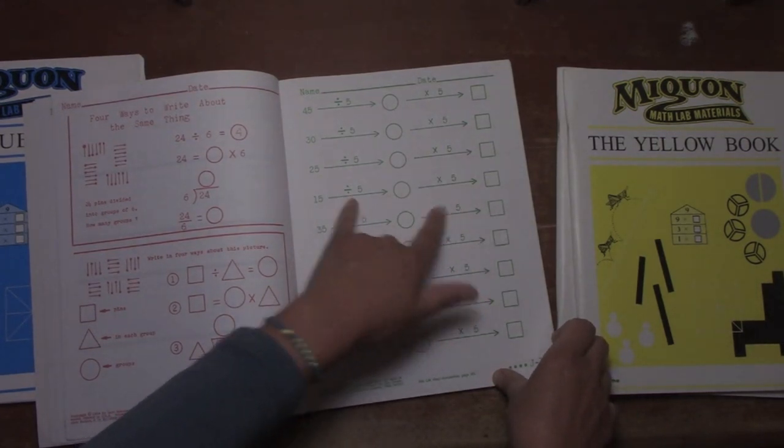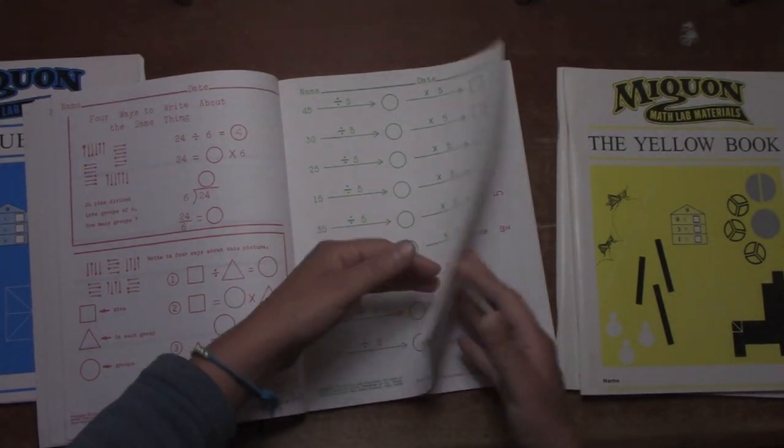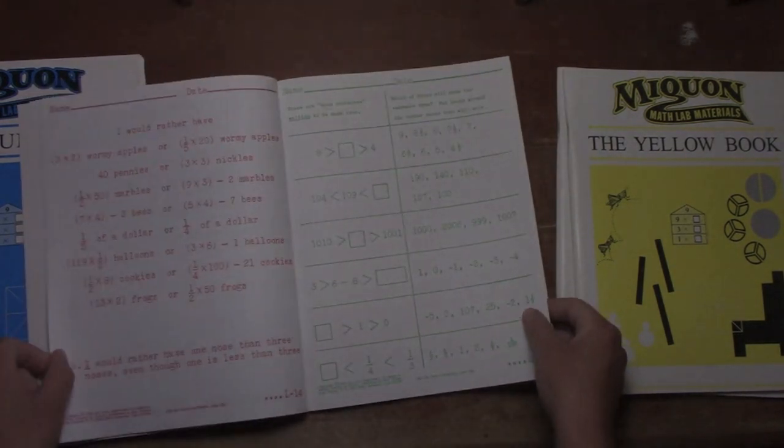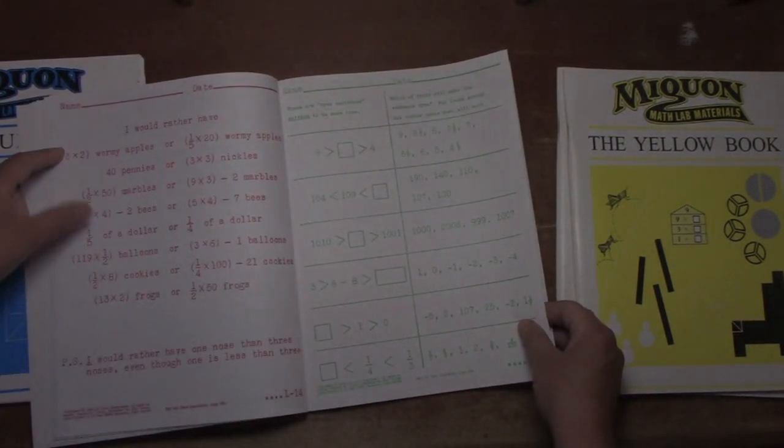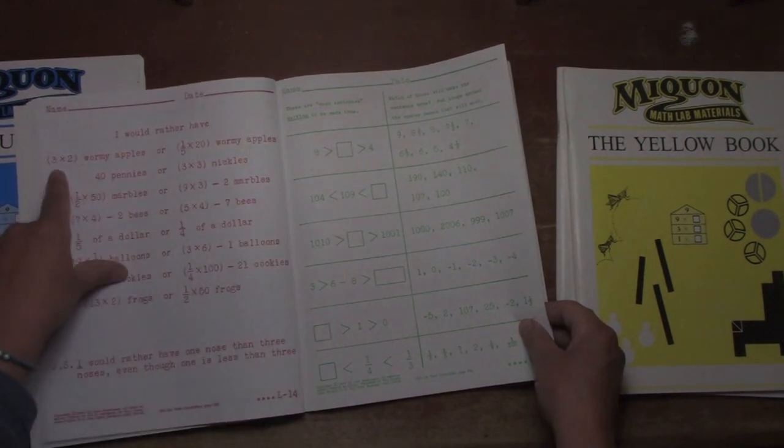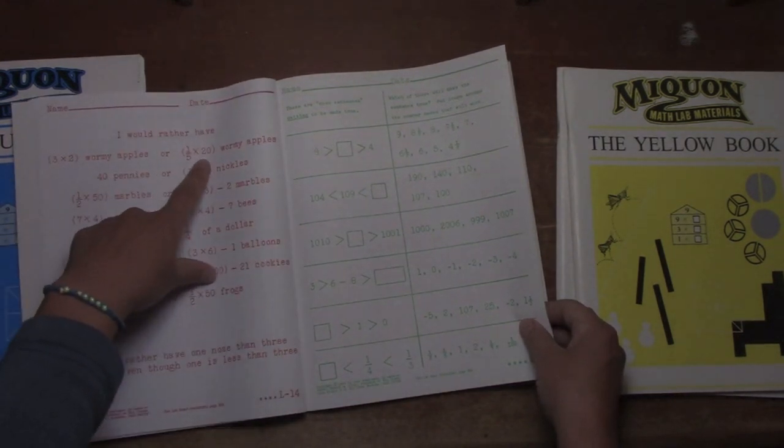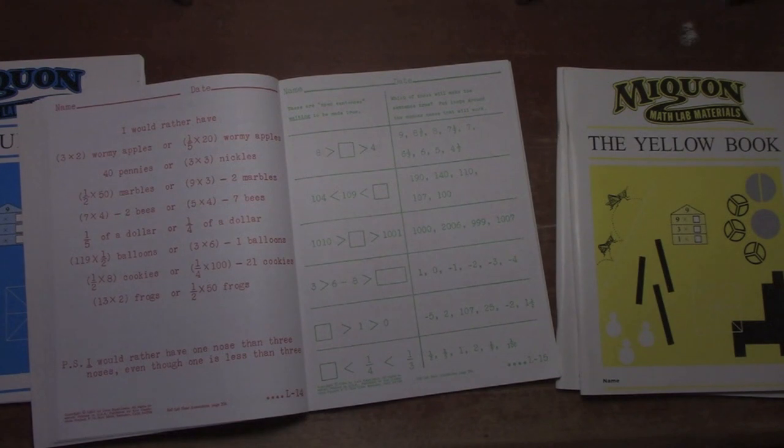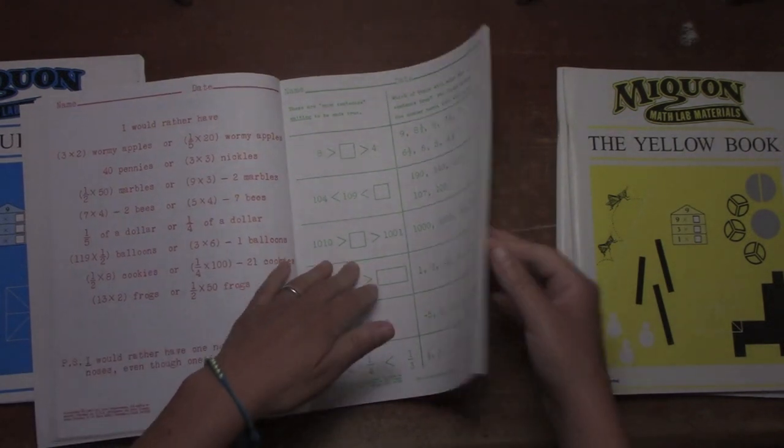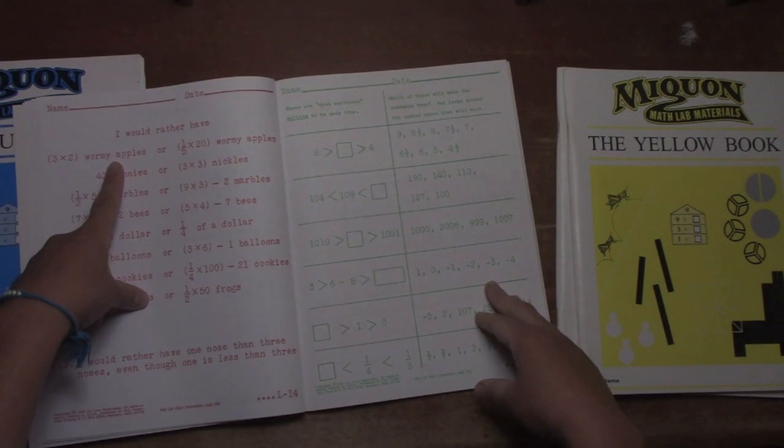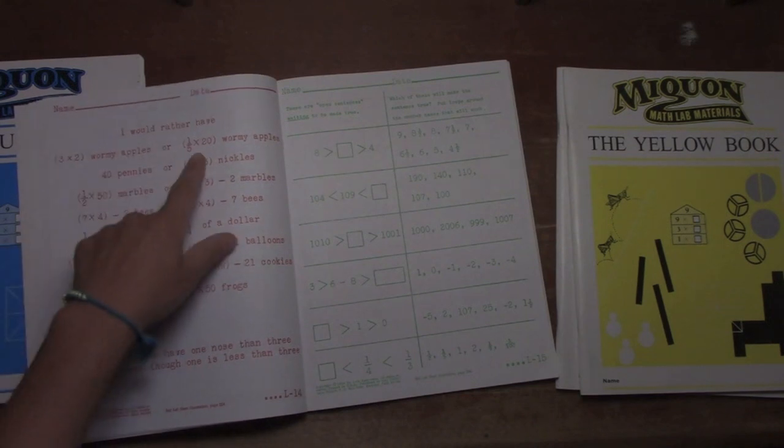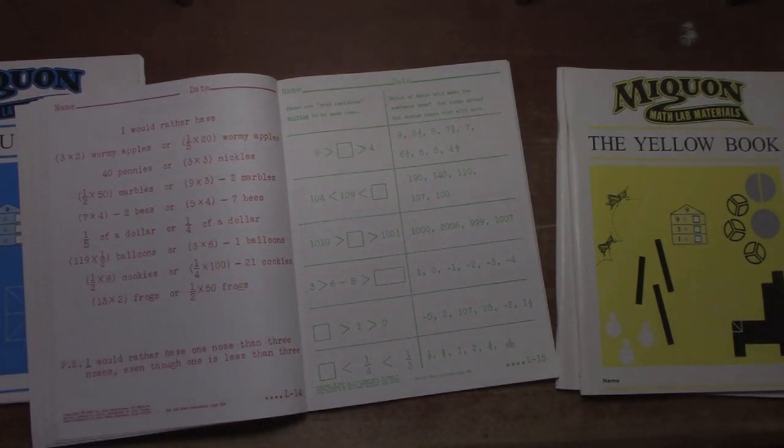So you see some 15 divided by five is this times five is that you can see that this is actually a reciprocal dividing and multiplying by the same number is the same as multiplying by one, which is the same number at the end. You see, they have some problems for them to think of, I'd rather have three times two wormy apples or one fifth of 20 wormy apples. So they have to figure out which one's more or less depending on if they'd want to have more or less of those items. So if your child wants three times two wormy apples, you'd say, why do you want that many wormy apples? Because wormy apples are gross. So this is less than this. So kind of talking them through that would help them to understand, we're comparing here. We're looking at less than greater than that sort of concept in the book.